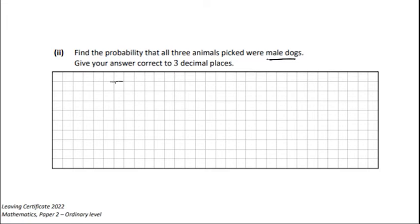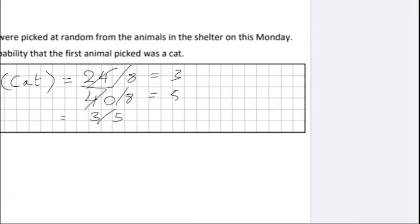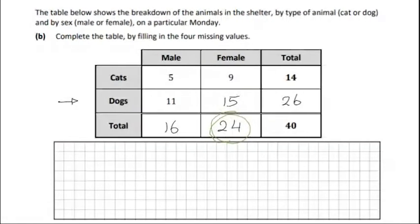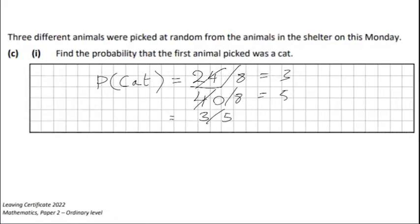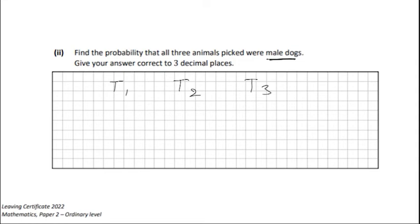So we'll just go T1, T2, and T3. So we got to look at it as an exercise of probability for each trial. So the first part would be to find out the specific amount. So it would be male dogs. So 11 out of 40 is going to be the probability of a male dog for the first choice. So probability one is going to be 11 over 40.